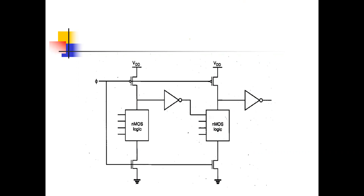In the pre-charge phase, both stage output nodes are charged to 1. But because of the NOT gate, its output will be 0. As per that 0 input, the second stage output remains 1 because it cannot get a path to discharge — the NMOS transistor is OFF due to the 0 input. Suppose all inputs become 1: the first stage output goes to 0, the NOT gate output becomes 1, and as per that 1, the second stage output goes to 0. We get the correct output.